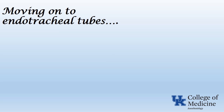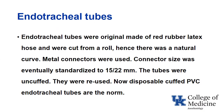Now it's time to move on to endotracheal tubes. When I started my residency, endotracheal tubes were mainly made of PVC, although there were red rubber latex tubes also in use. Red rubber latex tubes were originally cut from a roll and therefore had a natural curve to them. Metal connectors were used, eventually standardized to 15mm and 22mm. Tubes were uncuffed and reused. Now disposable cuffed PVC endotracheal tubes are the norm.